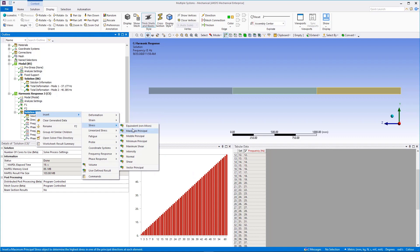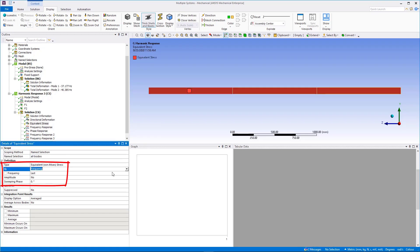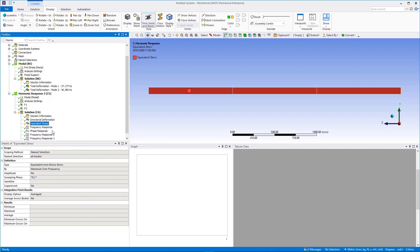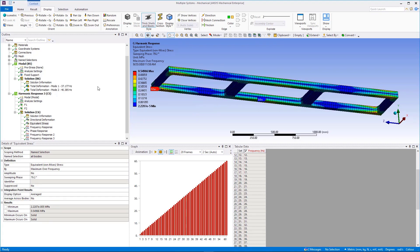Insert a plot of maximum equivalent stress and set by to max over frequency and the sweeping phase angle to 79.2 degrees. We could arrive at the same result if we plotted S equivalent by max over phase and set the frequency to 37 Hz.